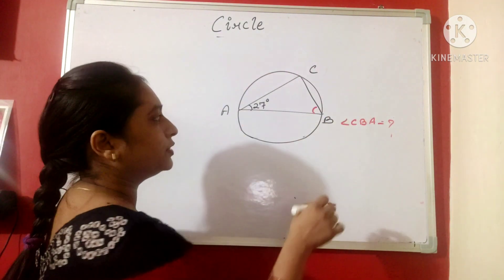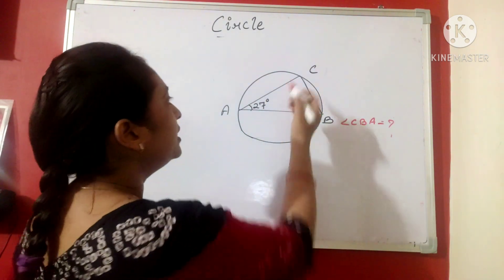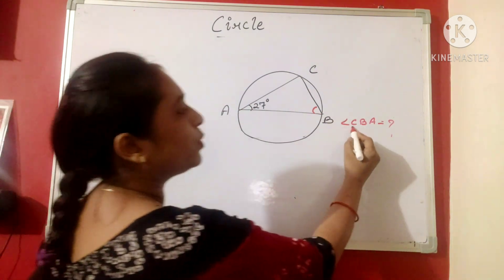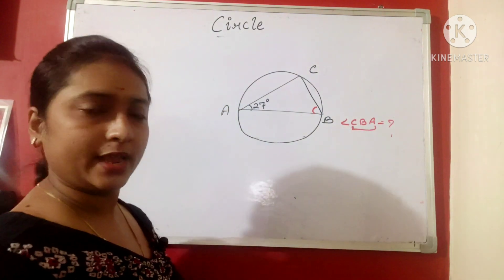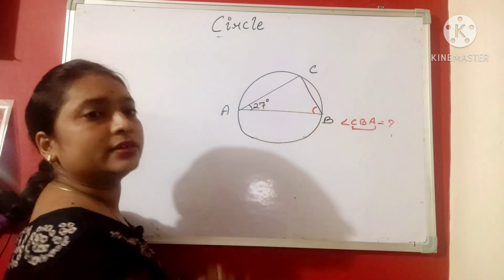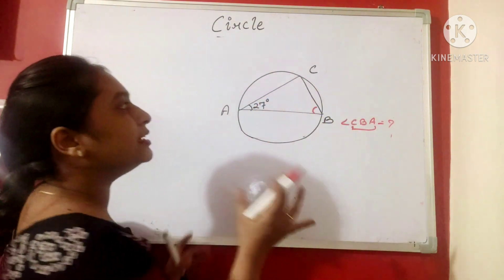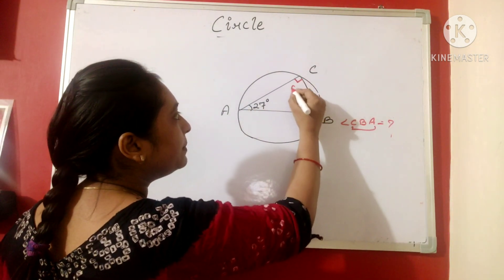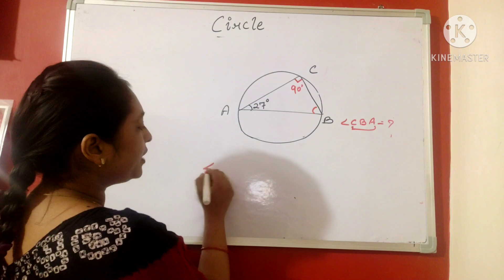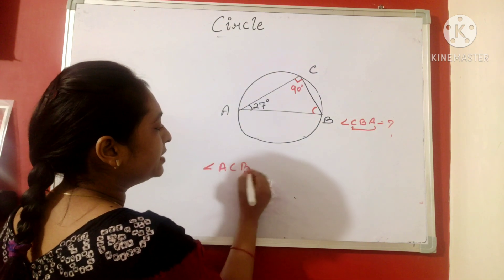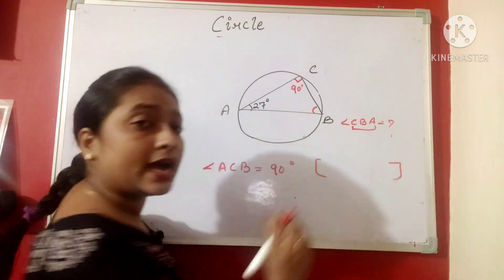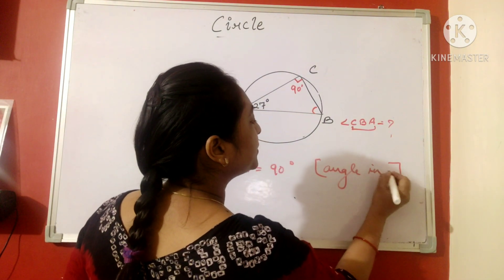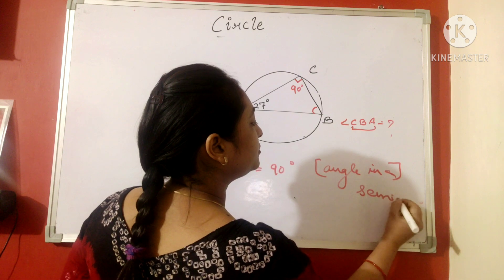Suppose this is a circle and one triangle is inscribed in the circle. The angle CAB is given 27 degree and we are supposed to find angle CBA. Now, if we see this, we can find that this triangle is inside a semicircle. That means this will be 90 degree. So, we can write angle ACB is equals to 90 degree. Reason will be angle in a semicircle.